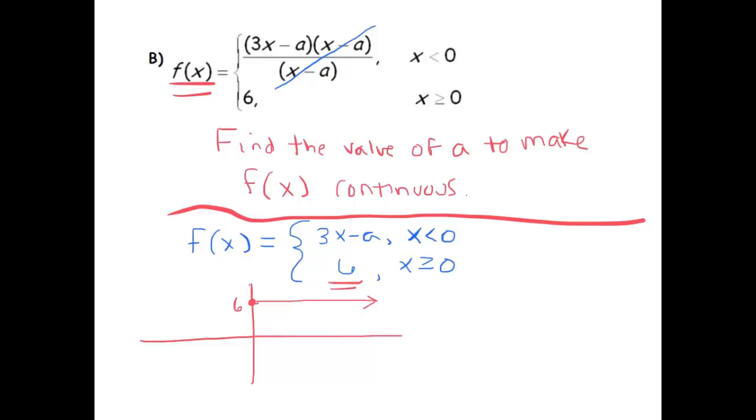And then the left part is 3x minus a. So what we need is we need to figure out what a needs to be in order to make this continuous. Right now this is a line with slope 3. We need to figure out which of these families of lines of slope 3...